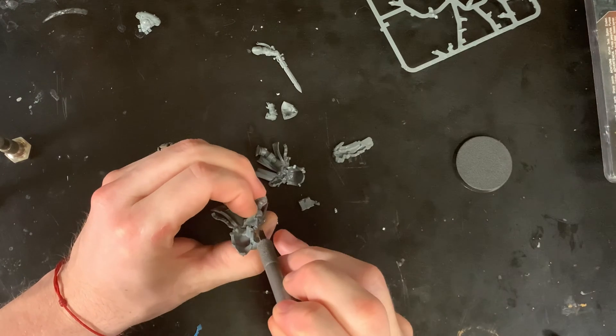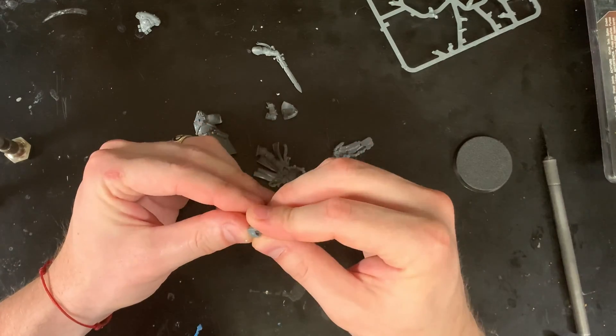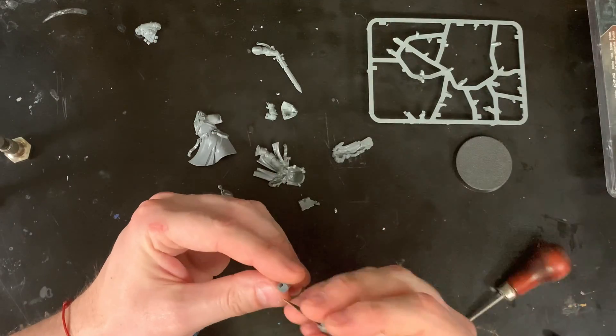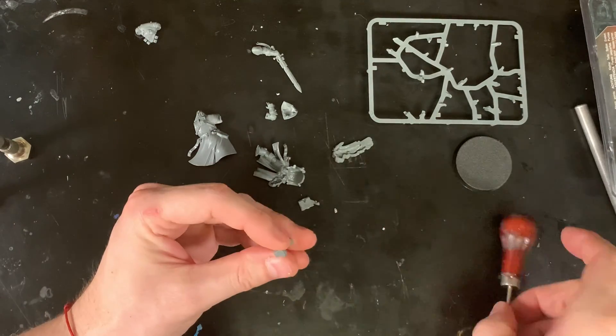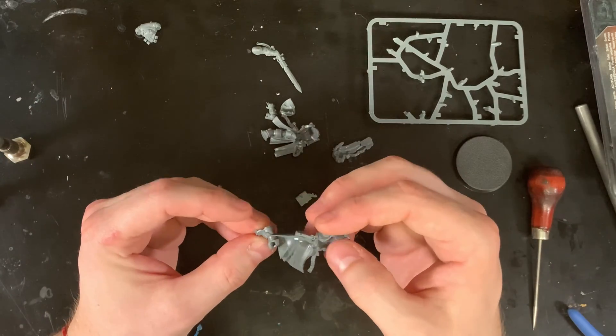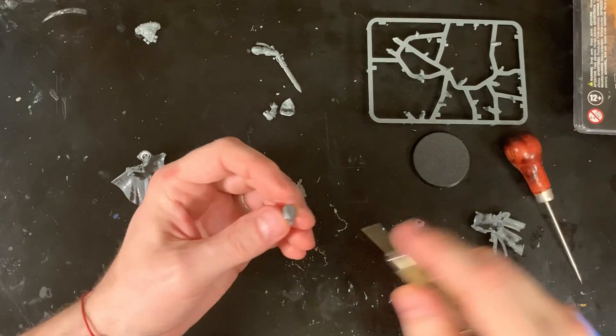So our first step is going to be getting a path for the wires to go. Most of this body is hollow, so that makes our job pretty easy. But I will have to drill a hole through his foot here on the right side that's just going to go up through his ankle into the knee, and then from there it's pretty much hollow, and then of course we're going to have to drill out the head.